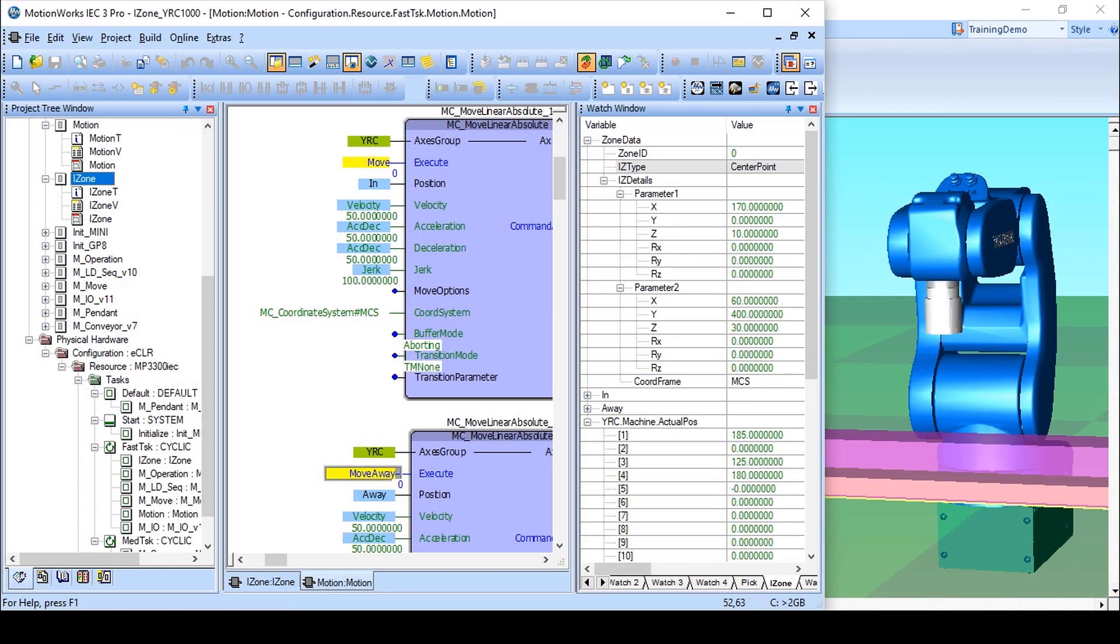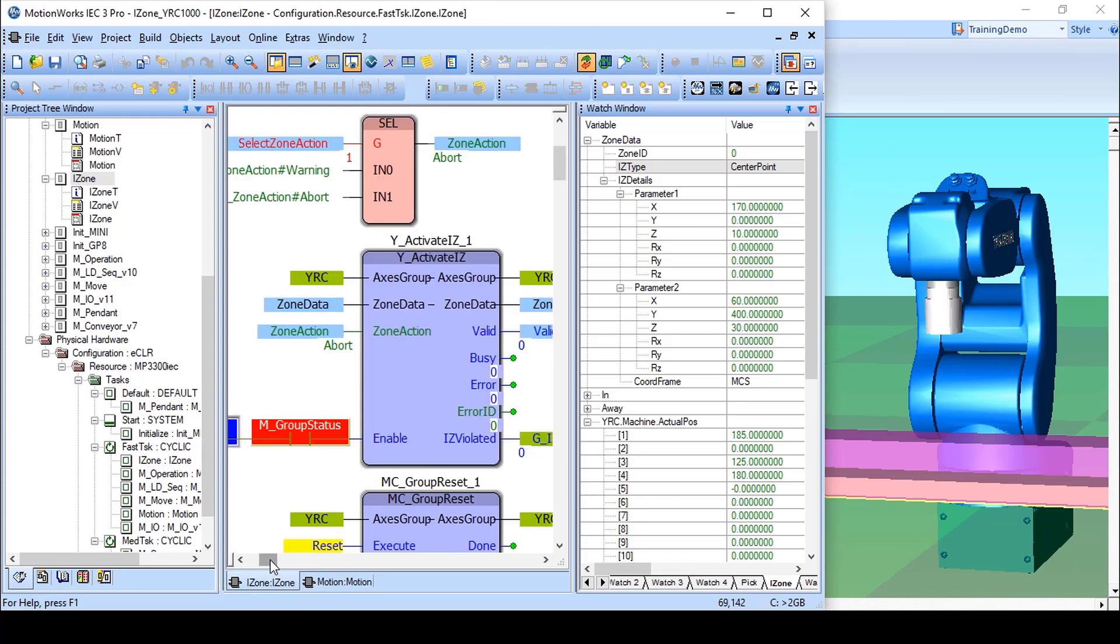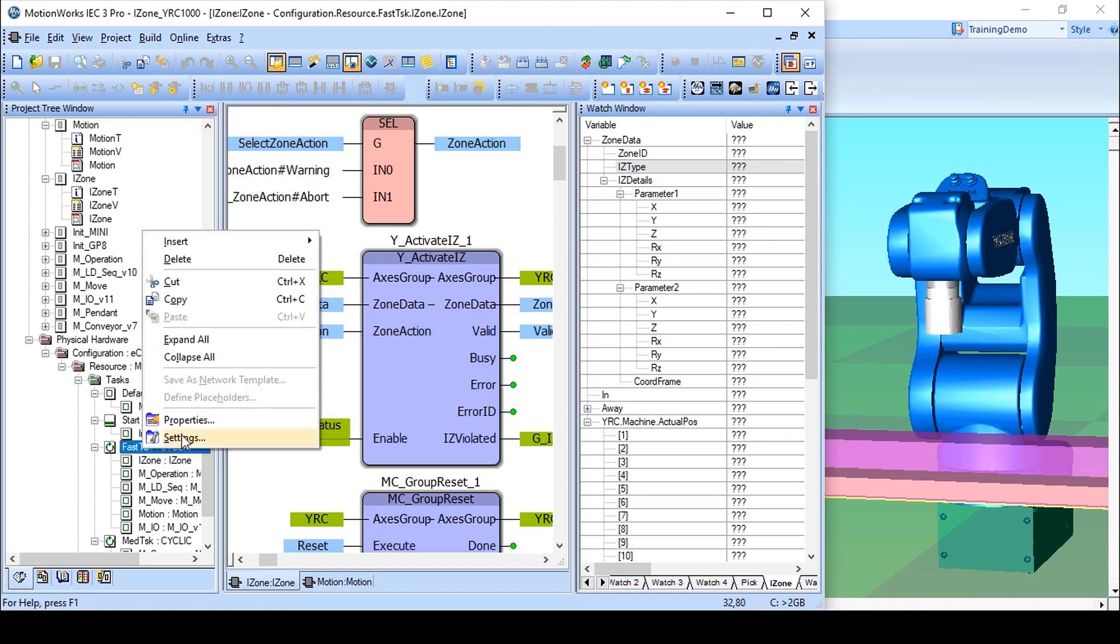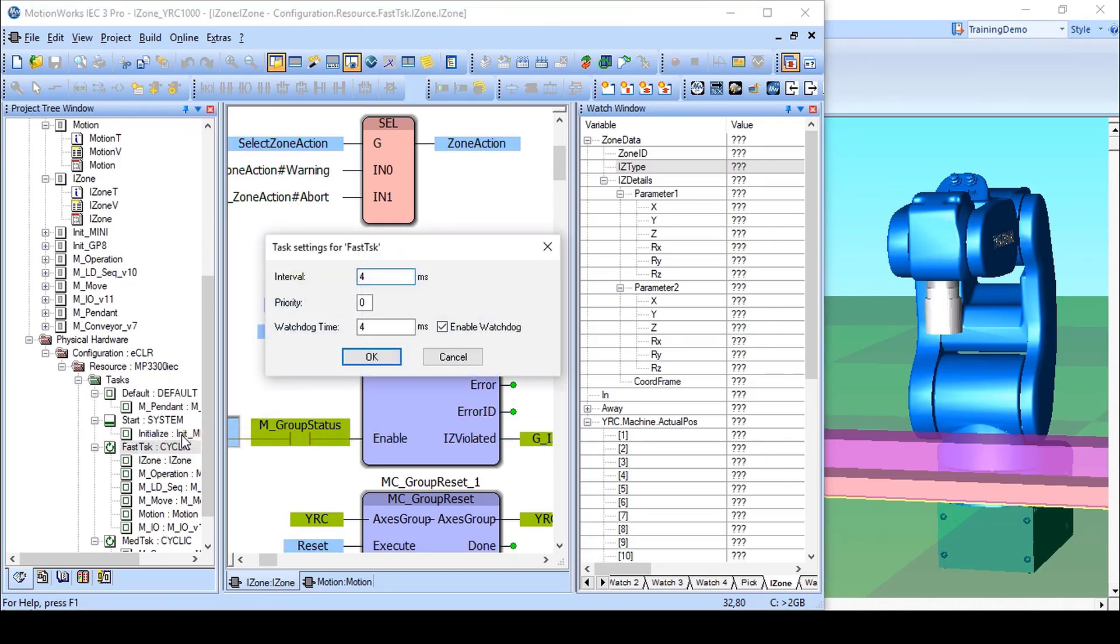Let me give a few general tips for those of you who will program interference zones in MotionWorks IEC. First, be sure that the Y_ActivateIZ block is in a program POU running in the FAST task. This is especially important for mechatrolink groups, since interference zone detection happens at the interval setting of the application task.